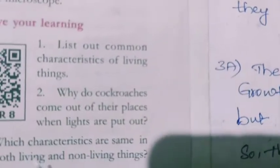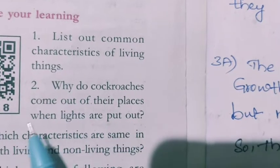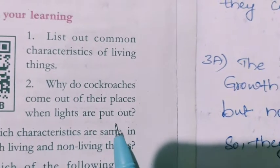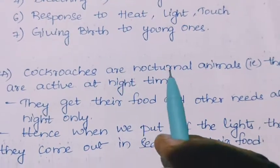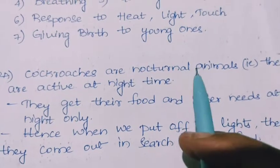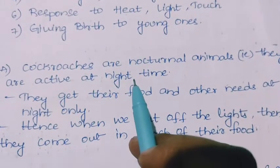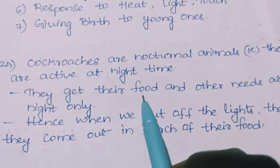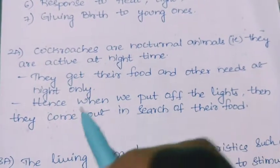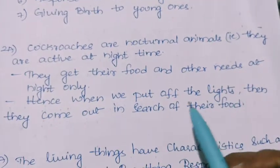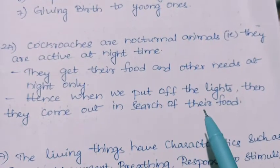Second question: why do cockroaches come out of their places when lights are put off? Cockroaches are nocturnal animals. Nocturnal animals means they are active at night time. They get their food and other needs at night only. Hence, when we put off the lights, they come out in search of their food.